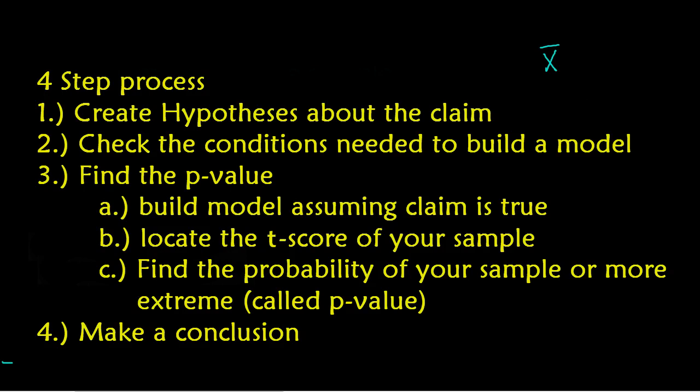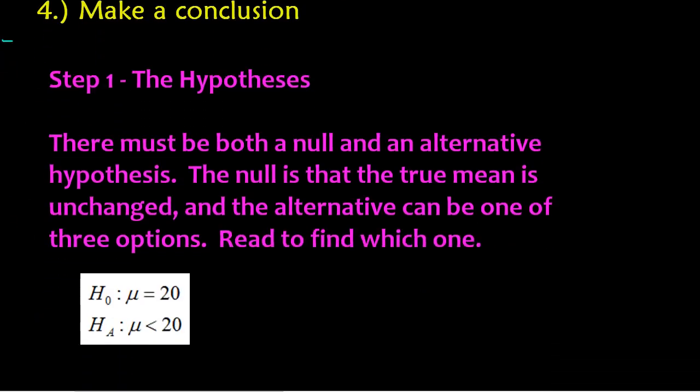So you need to get those conditions checked so you can build a sampling distribution. Then we have to find our p-value. So the first thing we have to do is build that sampling distribution. Then we have to locate our particular value in that model. We have to see if we have a significant sample or if we have just like a totally natural, normal sample. And then we have to find the p-value or the actual probability of our sample happening or more extreme. And we'll talk more about that when we dive into that step. And the fourth thing you have to do is make a conclusion based on your p-value. So again, all of this should sound really familiar if you've already talked about proportions.